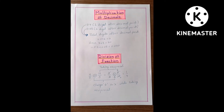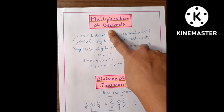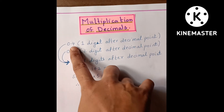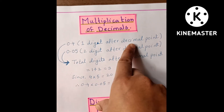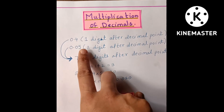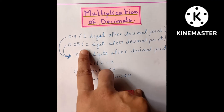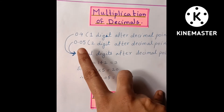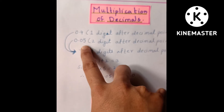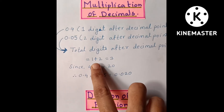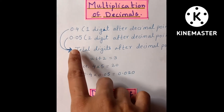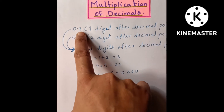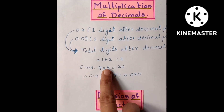The next page is multiplication of decimals. Here is one digit after the decimal point and here two digits after the decimal point. The total digits after the decimal point are three, because one plus two is equal to three — meaning after the decimal point, three digits are there.